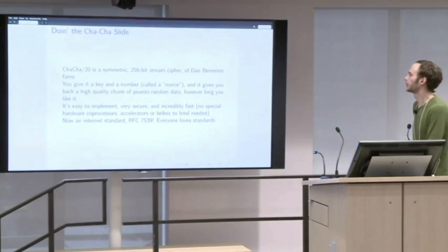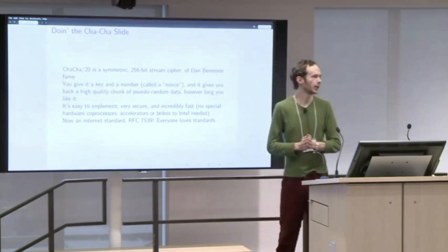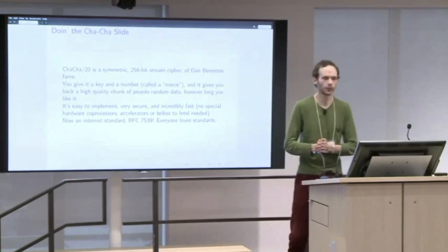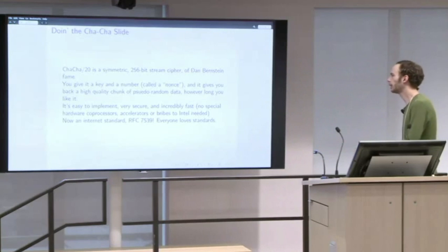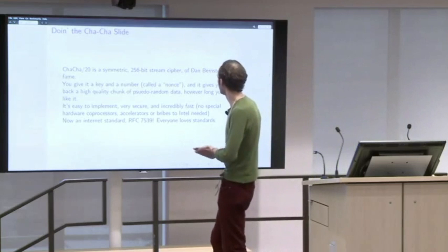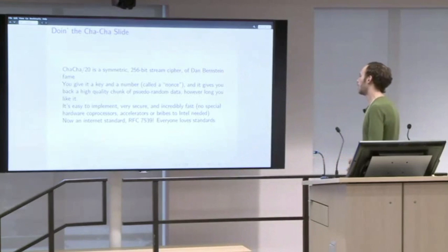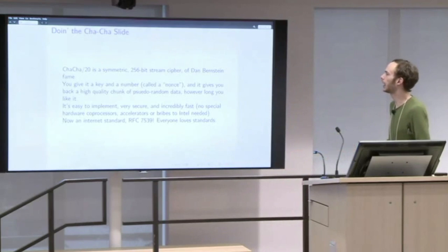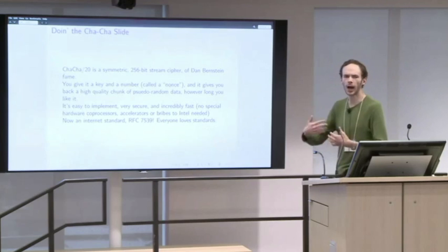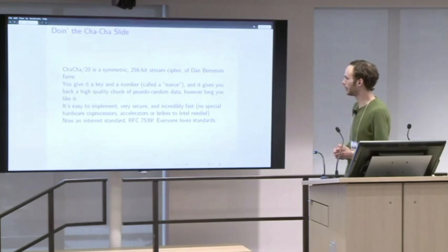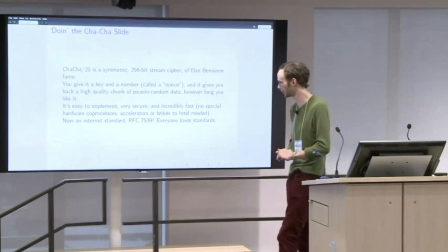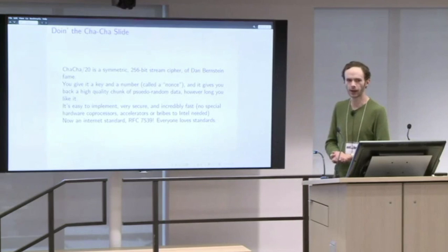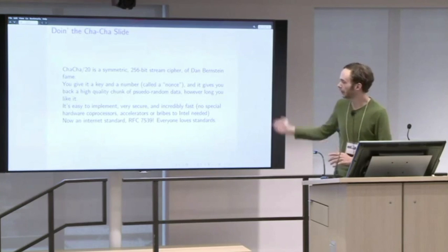Let's talk about an actual cryptographic function — ChaCha20. It is a symmetric 256-bit stream cipher designed and implemented by Dan Bernstein, who has a very large fan club. You give ChaCha20 a key and a nonce — a unique number you only use once — and it gives you back a high-quality chunk of random data. You can use that to encrypt data. It's very attractive for many reasons: it's very easy to implement, extremely secure, and very fast. Even in software it can compete with a hardware AES implementation. It also avoids some pitfalls in AES, and it's now an internet standard.